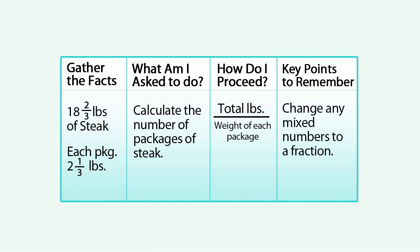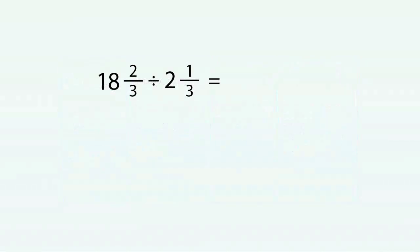Now, remember, in our key point, you should change any mixed numbers to a fraction. So, for example, the eighteen and two-thirds to an improper fraction becomes fifty-four plus two is fifty-six-thirds divided by, now the two and a third becomes what? Six plus one is seven over three. So, we'll divide it by seven-thirds.